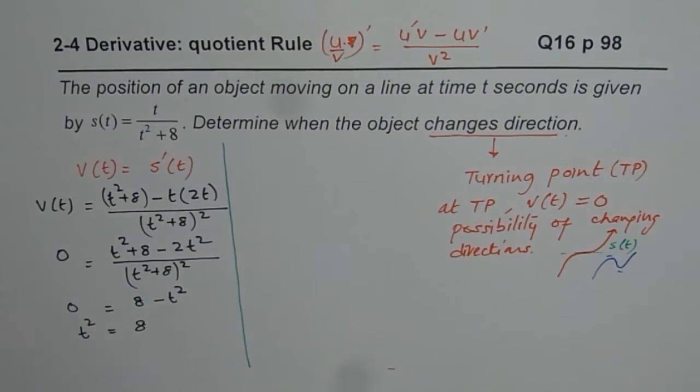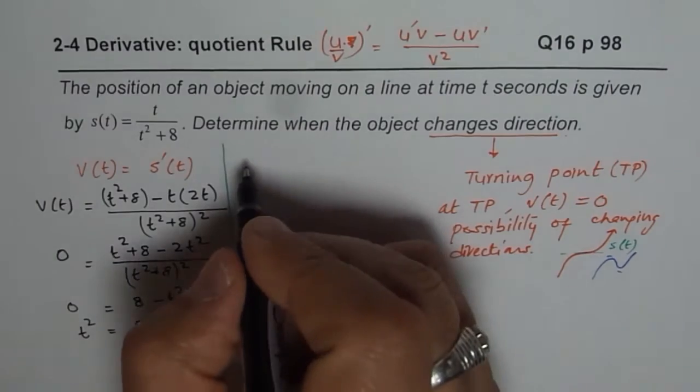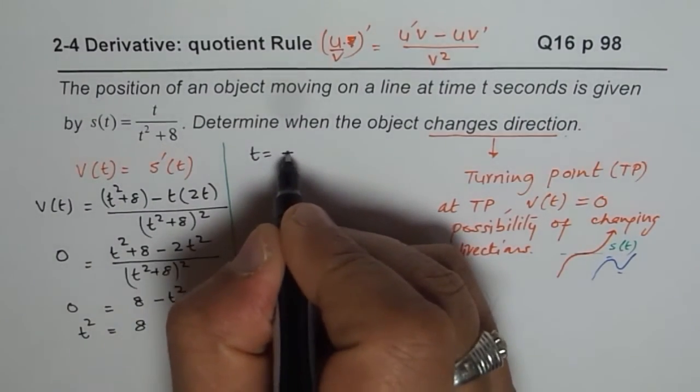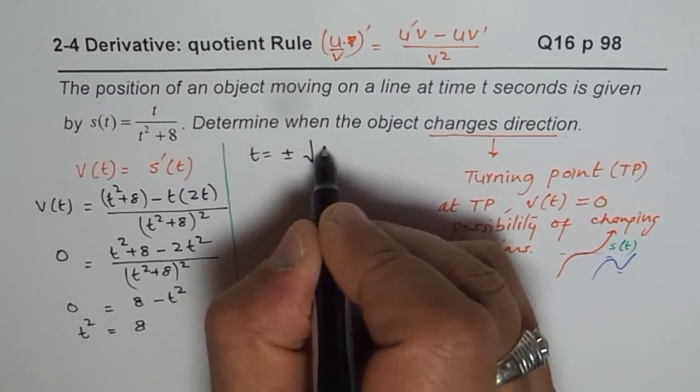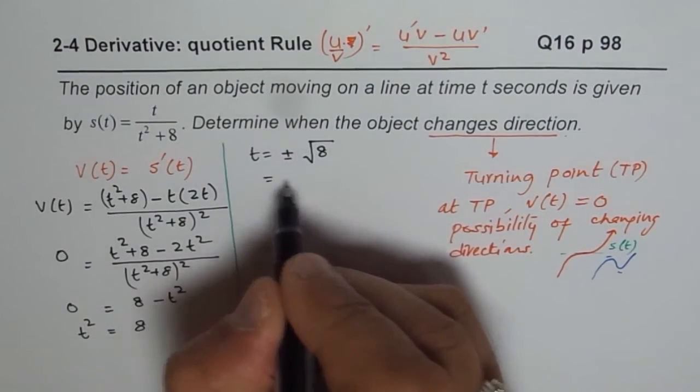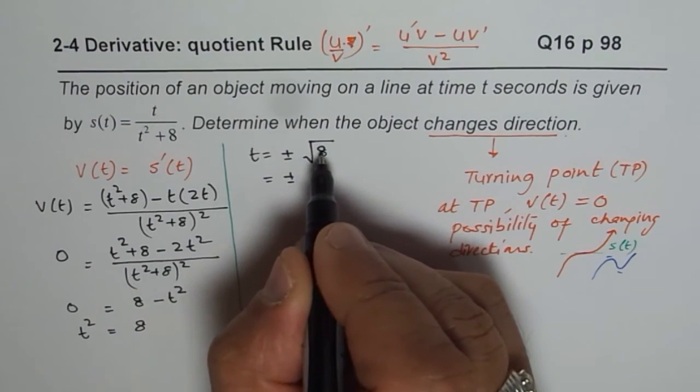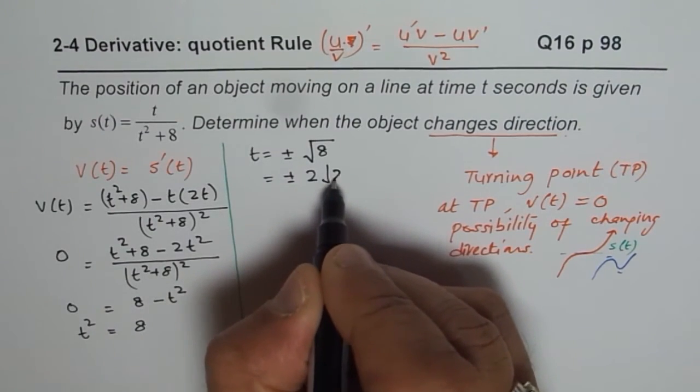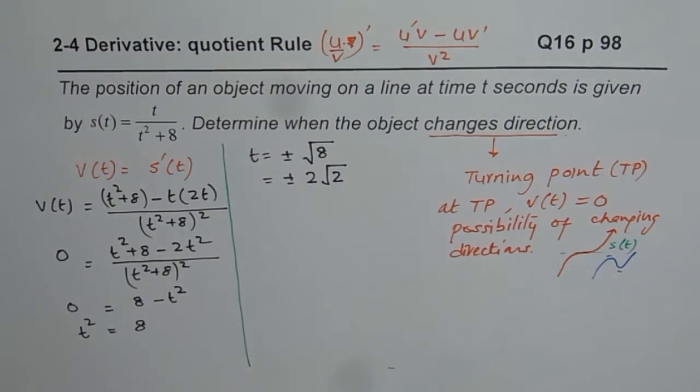What we get here is, t equals to plus minus square root of 8. That gives us plus minus 4 times 2, or 2 square root 2 is the time.